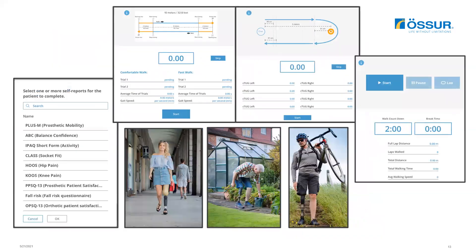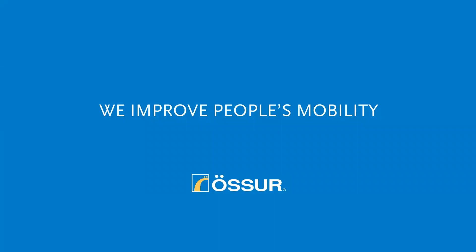Administration of outcome measures has become an important part of today's healthcare environment. Documenting patients' outcomes is now required for justification of an intervention and for demonstrating the value of the clinician's work. Over the next several presentations, we will talk about how you can use the different outcome measures included in the pro-op to further identify limitations in your patient's performance and how you might address them clinically. For more information on the pro-op, check the OSER website or contact your local OSER representative.